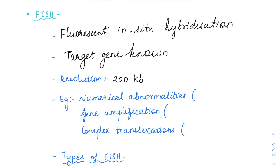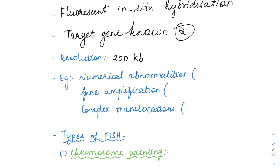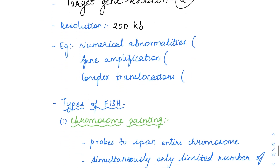Suppose you are checking for HER2 amplification. In that case you know there is going to be a HER2 amplification and you know the location of HER2. Only then can you use a DNA probe specific for that site to identify it. Target gene location must be known for using the FISH technique.